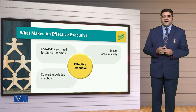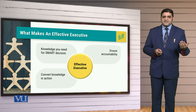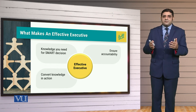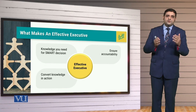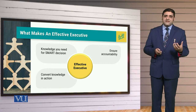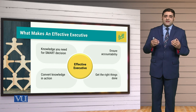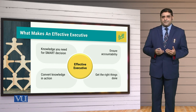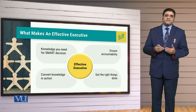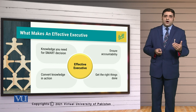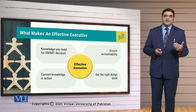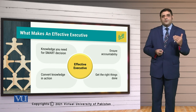The third important thing related to becoming an effective executive is that the leader or executive is able to convert knowledge into action, and that action is conducted and executed in a way that objectives are being met. Last but not the least, the effective executive is going to get the right things done — and obviously that will be the proof of his effectiveness. Rather than focusing on doing things right, he focuses on doing the right things, and while doing so, is able to accomplish organizational goals and objectives more efficiently.